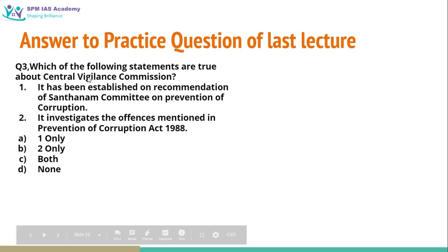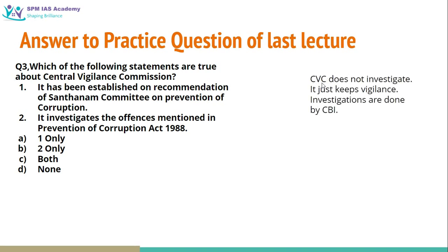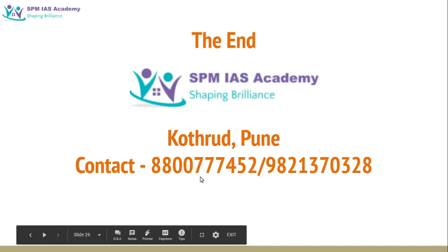Third question: which of the following statements are true about the Central Vigilance Commission — it has been established on the recommendation of the Santhanam Committee on Prevention of Corruption, and it investigates corrupt offences mentioned in the Prevention of Corruption Act 1988? CVC does not investigate — the first statement is correct, as the Santhanam Committee on Prevention of Corruption was established by the central government in 1964, and on its recommendation CVC was established. But CVC does not investigate; it just keeps vigilance regarding corruption in public offices. For investigations it depends on CBI. So the second statement is wrong. The correct answer will be A — statement 1 only. That is all for the day, thank you.